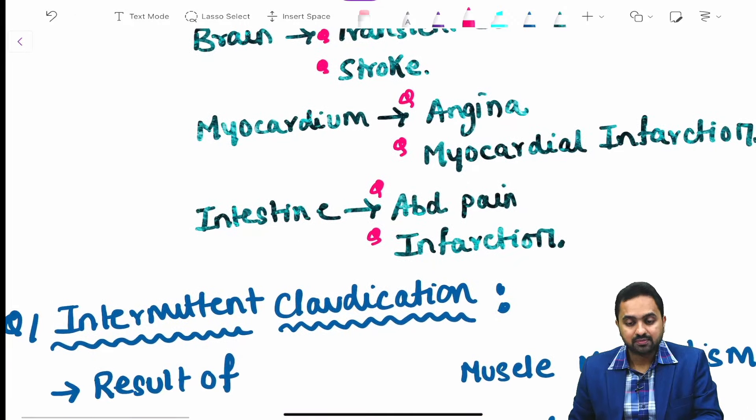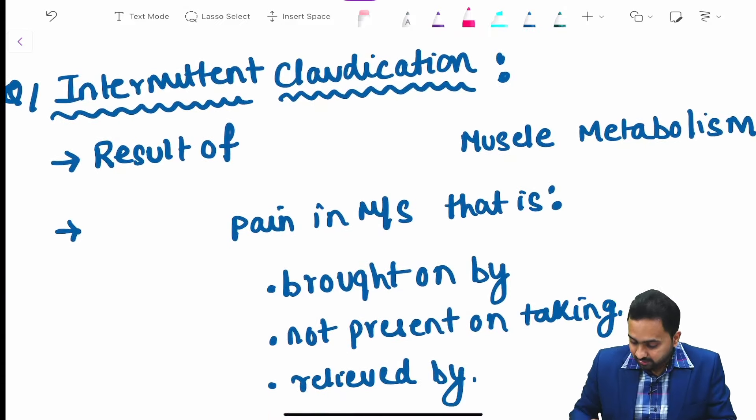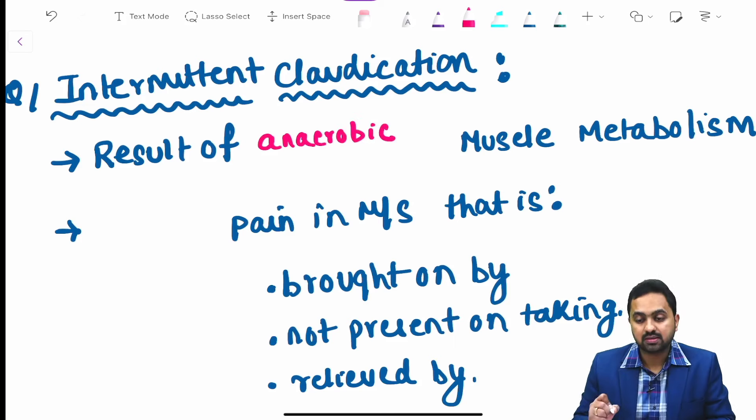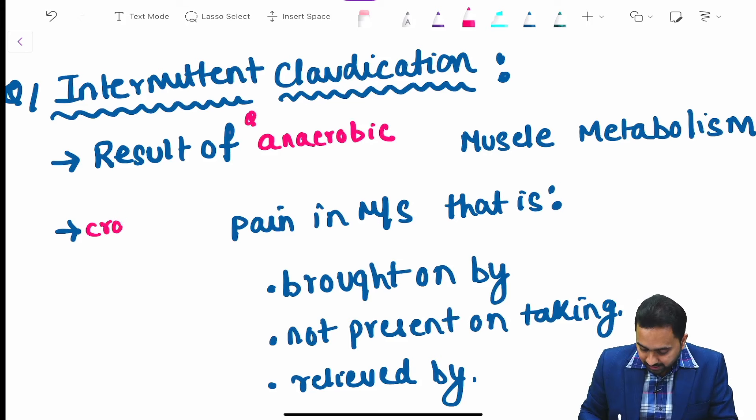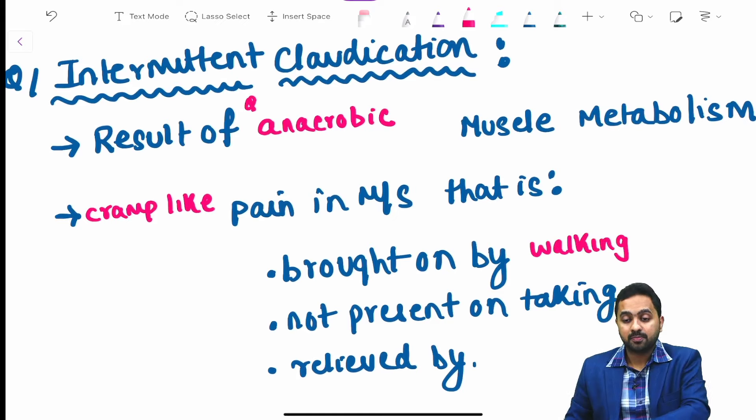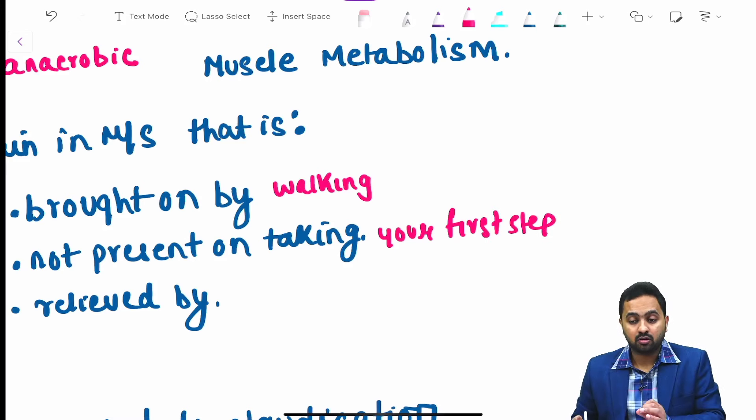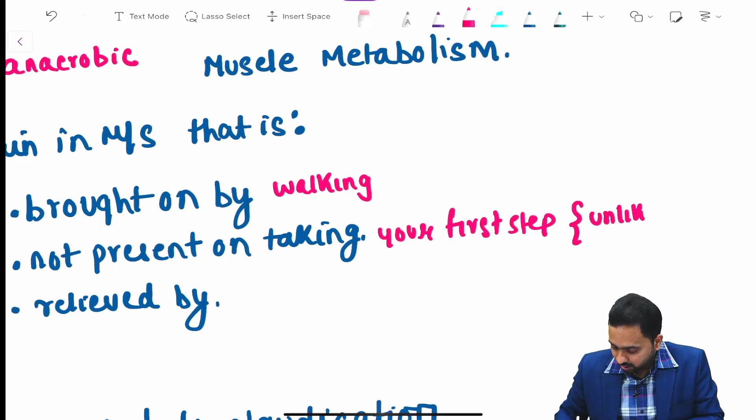The first concept is intermittent claudication. What is intermittent claudication? This is a result of anaerobic muscle metabolism. It is a cramp-like pain brought on by walking. It is not present on taking your first step, which differentiates it from osteoarthritis.